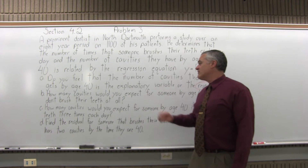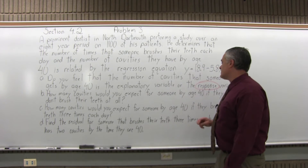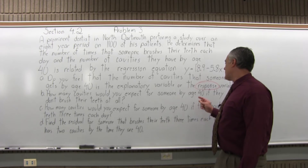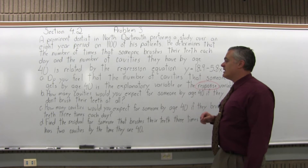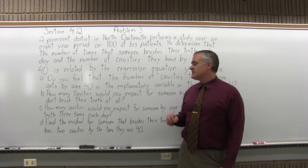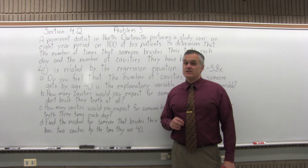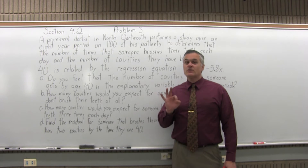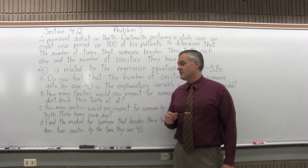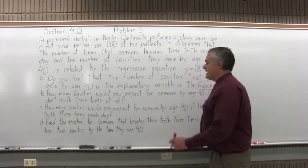Part B: how many cavities would you expect for someone by age 40 if they don't brush their teeth at all? Don't brush their teeth at all — that's zero times per day. So zero will be the value for x.